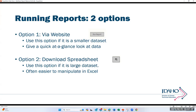When running reports in SkillStack, there are two ways to do that. When you get to the reporting screen, you can run the report directly on the website by clicking the run report button — this is good for smaller data sets, though larger data sets take longer to compile. In most cases, it's easier to download the data and look at it in Excel so you can manipulate it using Excel's features. Look for the download spreadsheet button — the icon with an arrow pointing down.